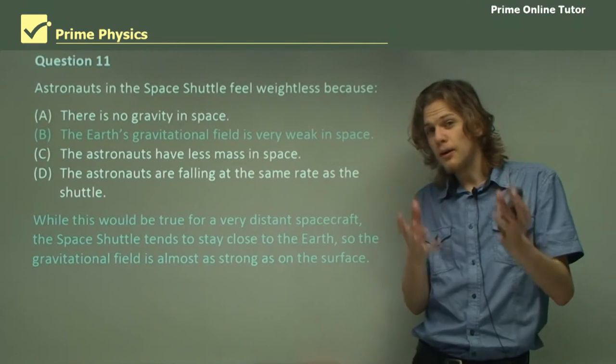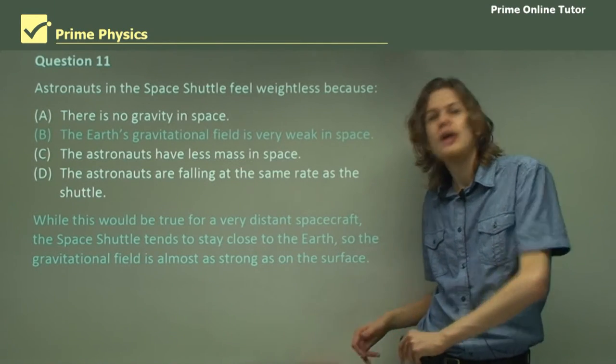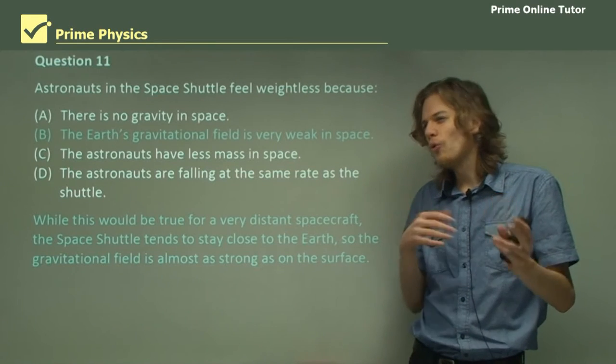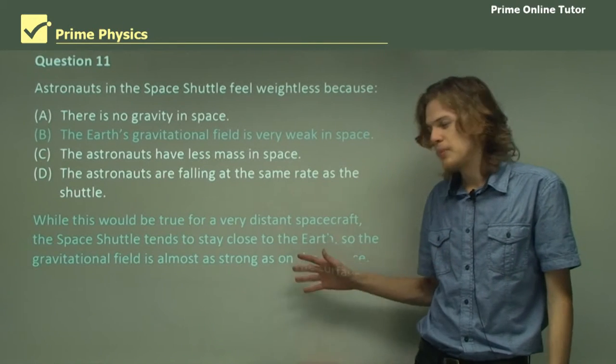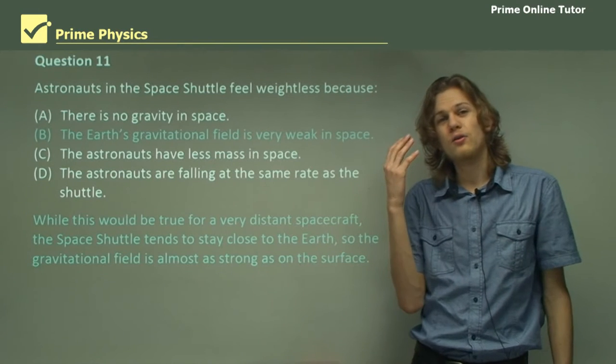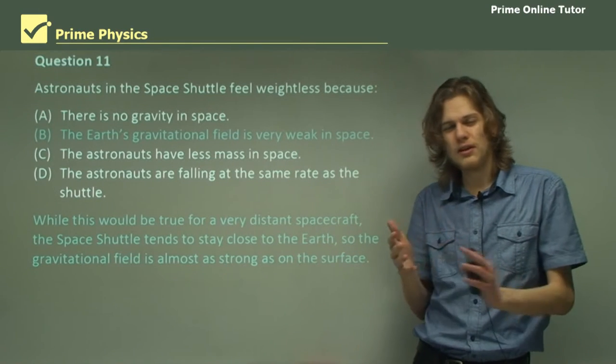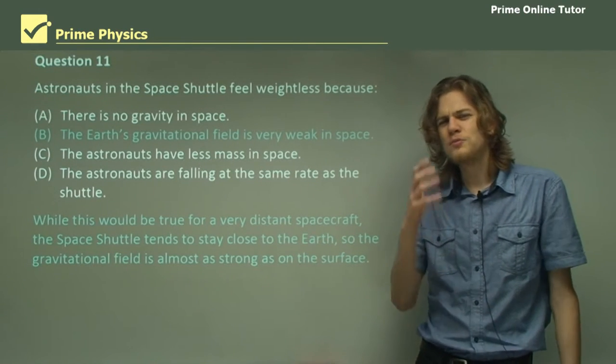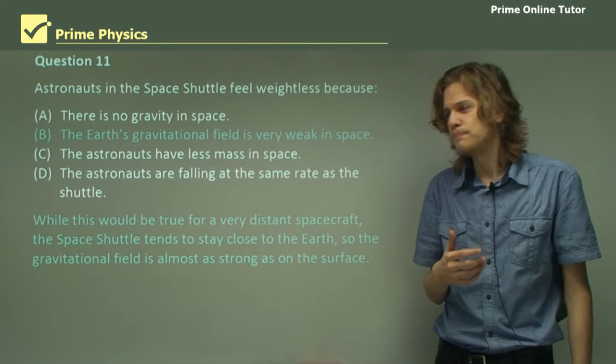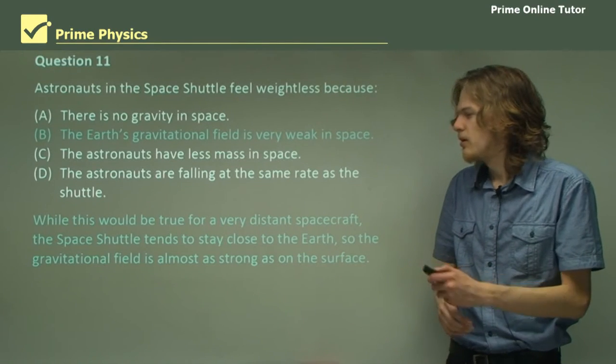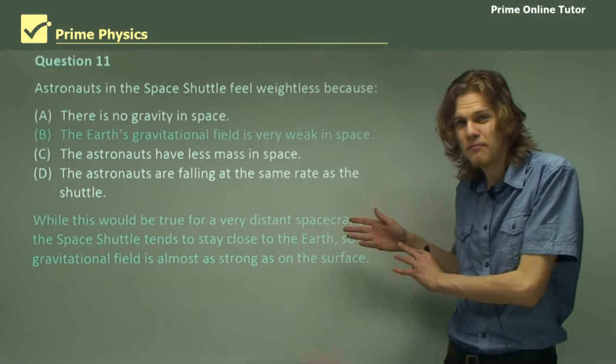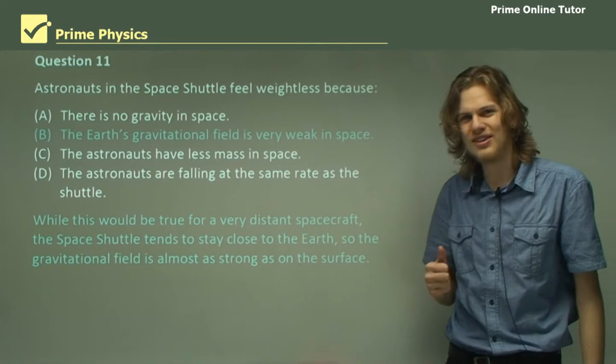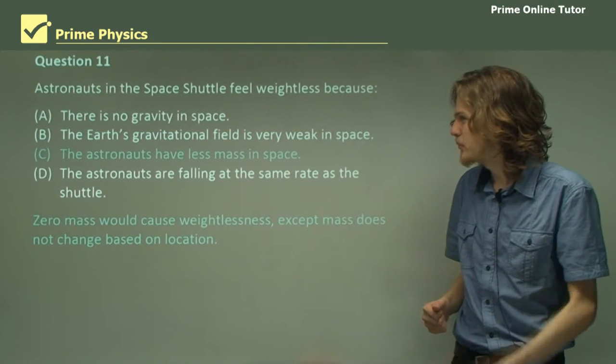Now while it is weaker than on the surface, it is not all that much weaker. At the altitude of the space shuttle, the gravity is about 8.7 meters per second squared, which is pretty close to what we have on the surface. Of course, if we were going to Jupiter or something, then this would be closer to the correct answer.